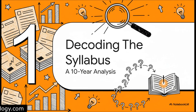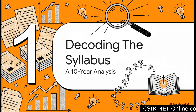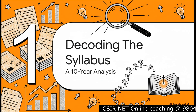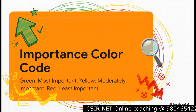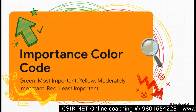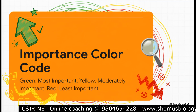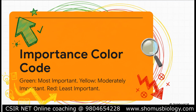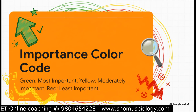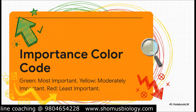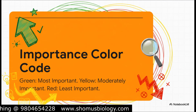So how do we know what's truly important? This isn't guesswork — this strategy is built on a deep dive analysis of the last 10 years of CSIR NET question papers. To make this super simple, we're using a color-coding system. Think of it like a traffic light for your studies. Green means go — these topics are your top priority. Yellow means slow down — they're moderately important. And red means you can ease up — they're the least important, and way less likely to appear.